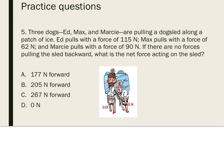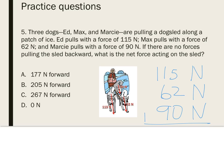Number five: three dogs — Ed, Max, and Marcy — are pulling a dog sled along a patch of ice. Ed pulls with a force of 115 newtons, Max pulls with a force of 62 newtons, and Marcy pulls with a force of 90 newtons. If there are no forces pulling on the sled backward, what is the net force acting on the sled? Since all the dogs are pulling in the same direction, the forces add together: 115 + 62 + 90 = 267 newtons forward. The sled experiences an unbalanced force of 267 newtons pulling it forward. That would be answer C.